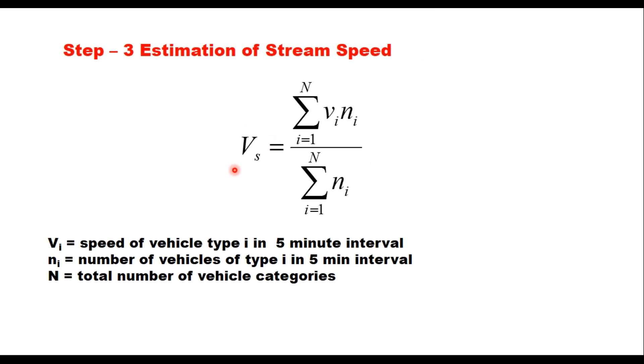The speed is coming from speed data and number coming from classified traffic volume count. So stream speed for each 5 minute interval is calculated using this equation: summation of VI NI upon summation of NI. This is the weighted average speed of all vehicles. VI is the speed of vehicle type I in 5 minute interval, NI is the number of vehicles of type I in that interval, and capital N is the total number of vehicle categories.